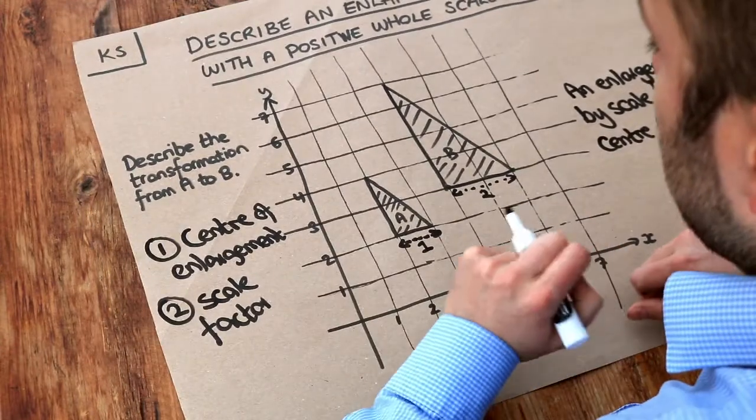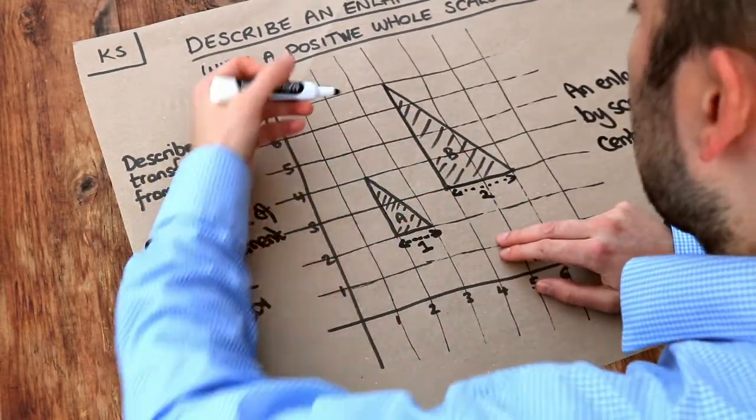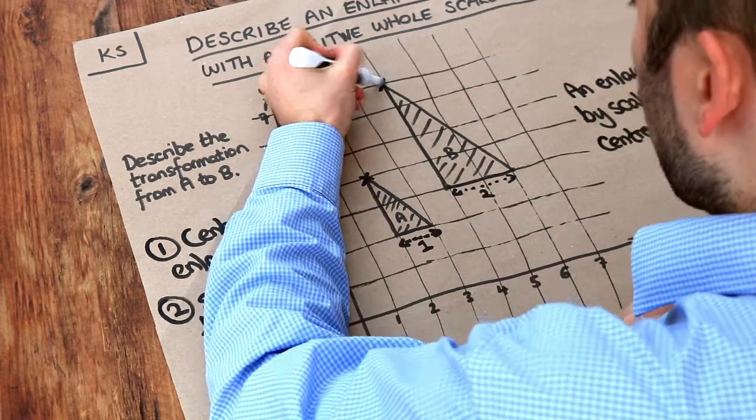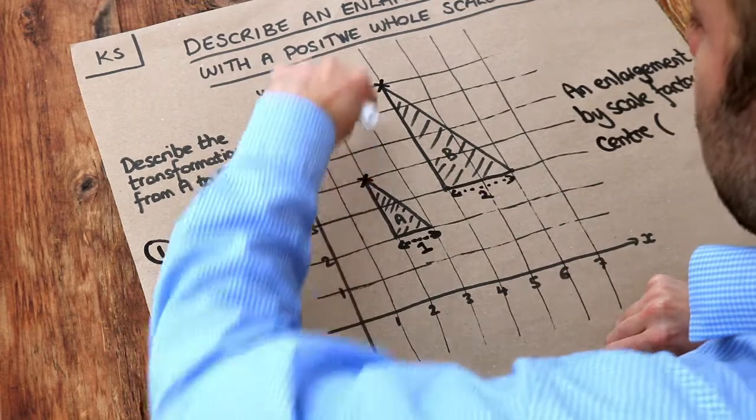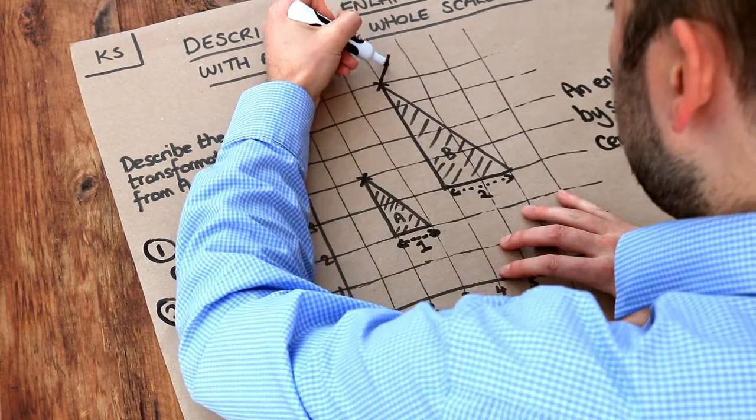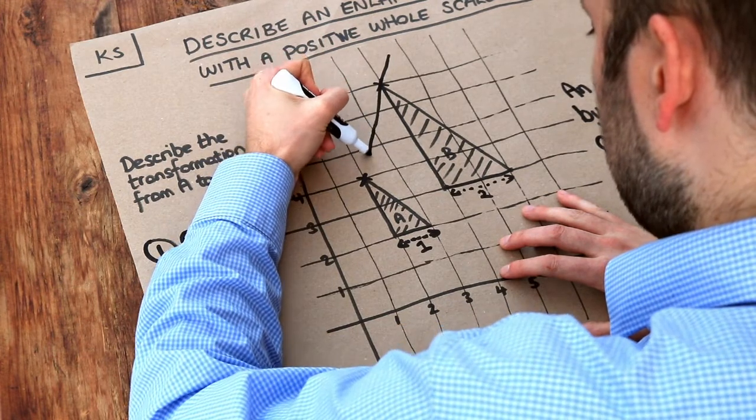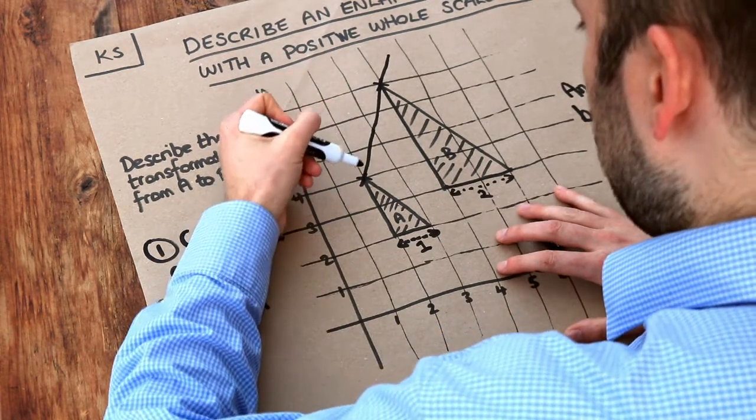Now the way we can do it is to use a ruler. Now I don't have a big ruler on me. And what we do is we pick a point on one of the shapes, and the equivalent point on the other shape. So the kind of top pointy bit. And what we do is we use our ruler to draw a straight line that goes through those two points. And we keep going.